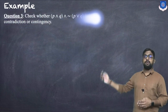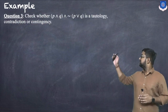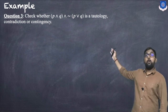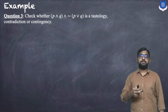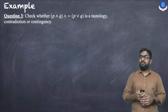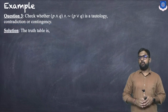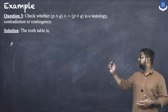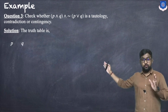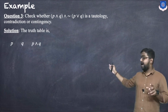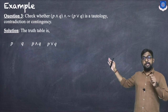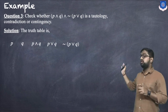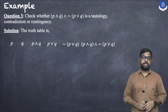Next example: check whether p∧q∧¬(p∨q) is a tautology, contradiction, or contingency. We need to create a truth table with columns for p, q, p∧q, p∨q, ¬(p∨q), and the final statement.